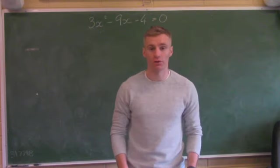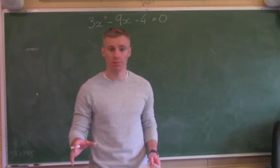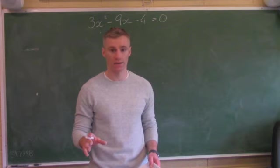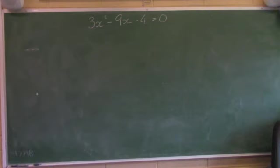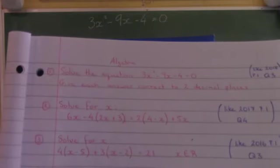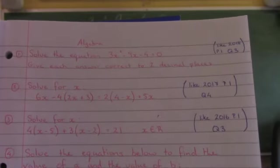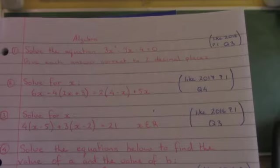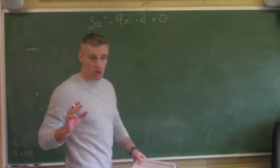Hi everyone, we're going to look at some algebra questions. Algebra is an important topic on paper 1, and it can also come up in paper 2 in different areas. I'm going to focus on questions regularly asked in paper 1. The first question is: solve the equation 3x squared minus 9x minus 4 equals 0. Give each answer correct to two decimal places.